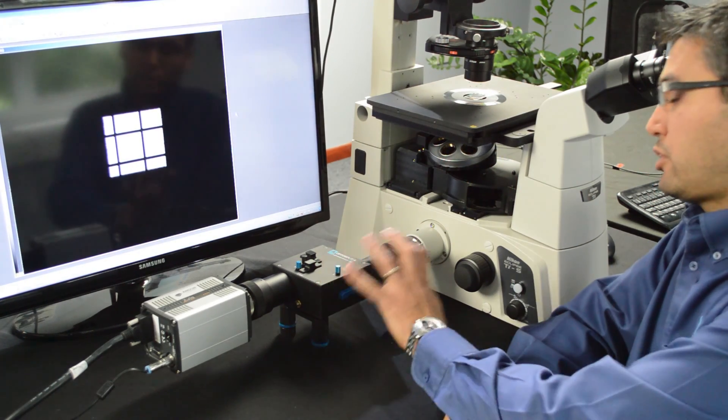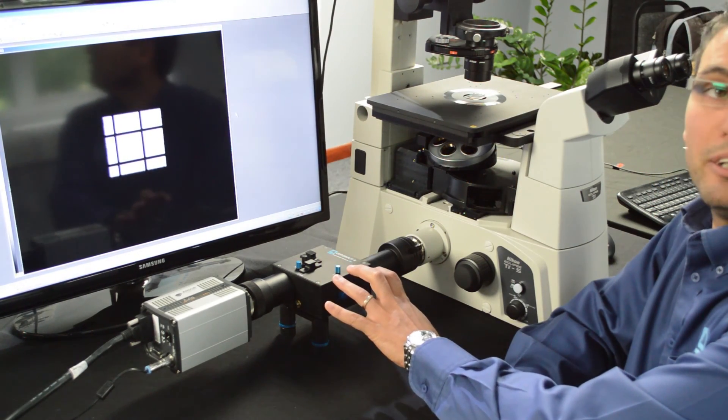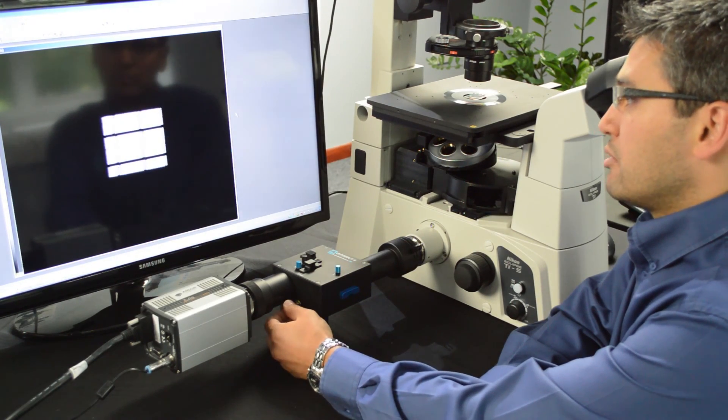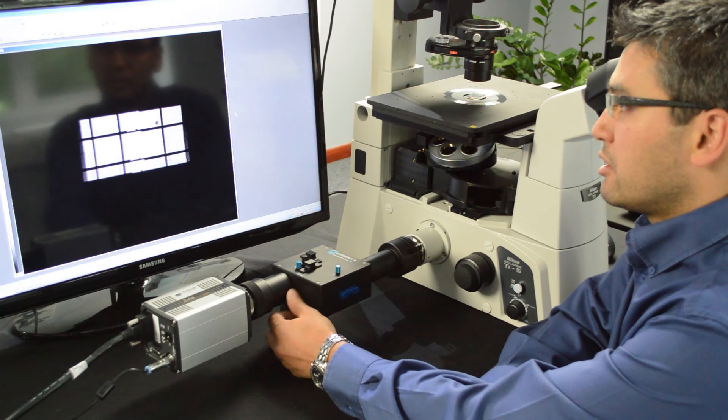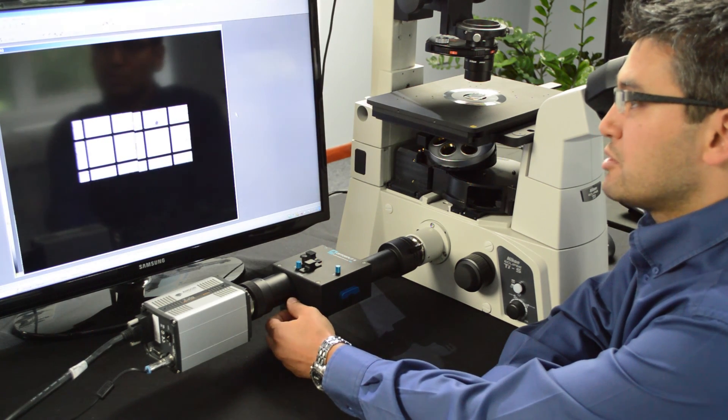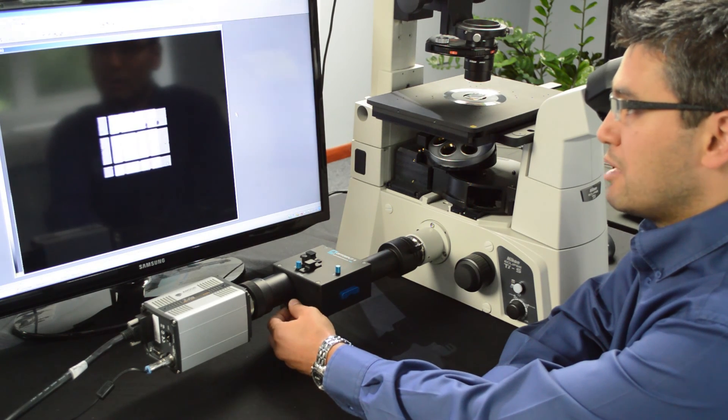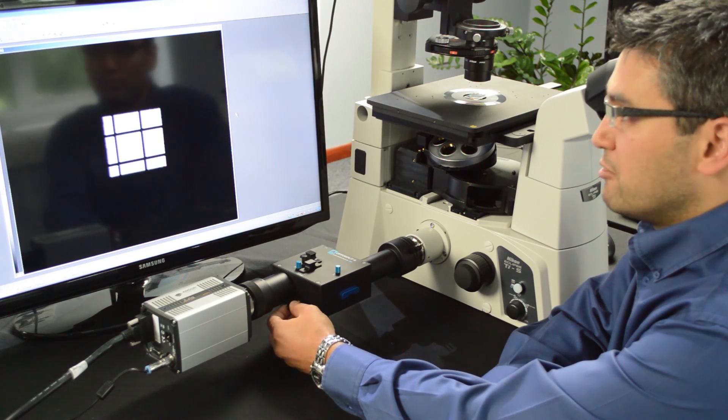You have your calibration cube in the OptiSplit and the next thing you want to do is to bring your images or your emissions together and make sure that there's no aberration and make sure that they overlap.